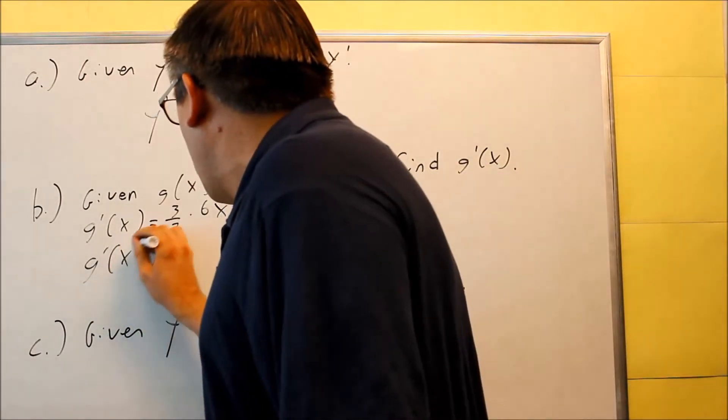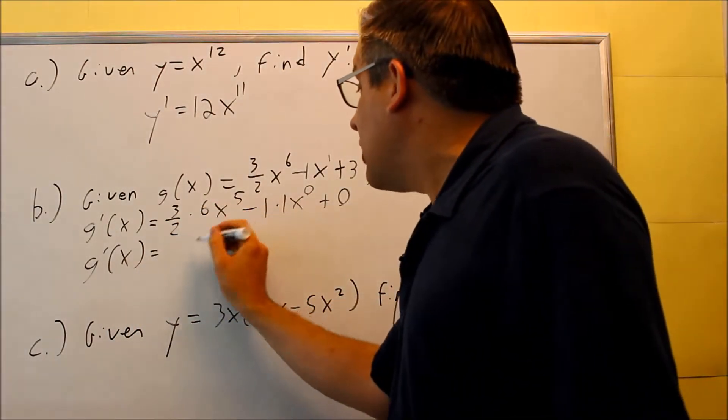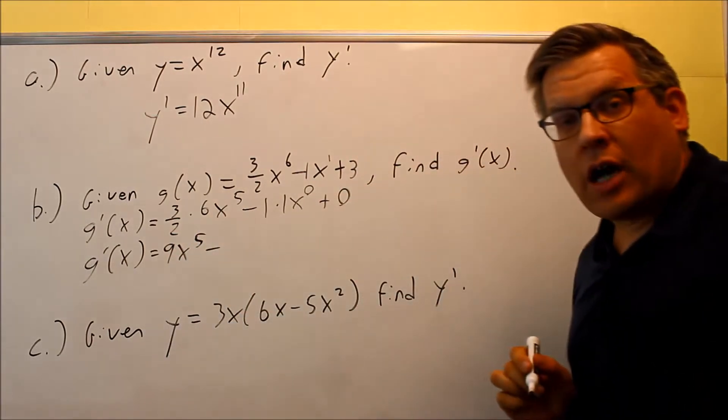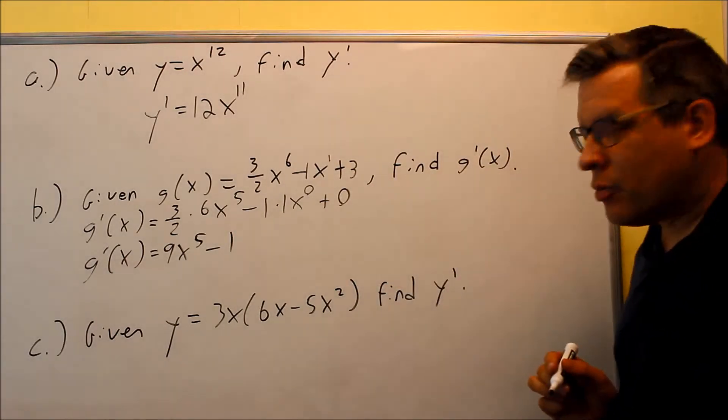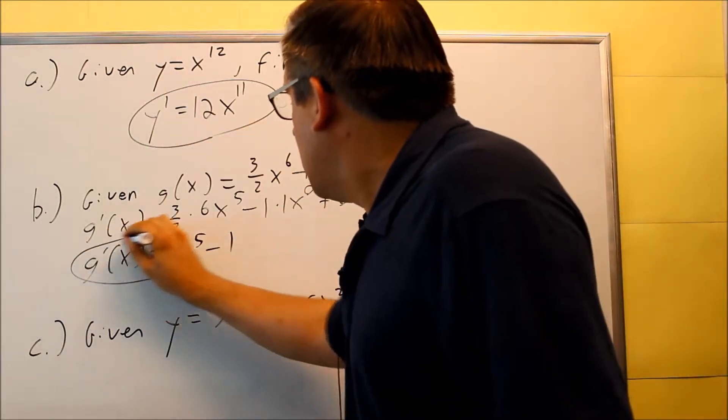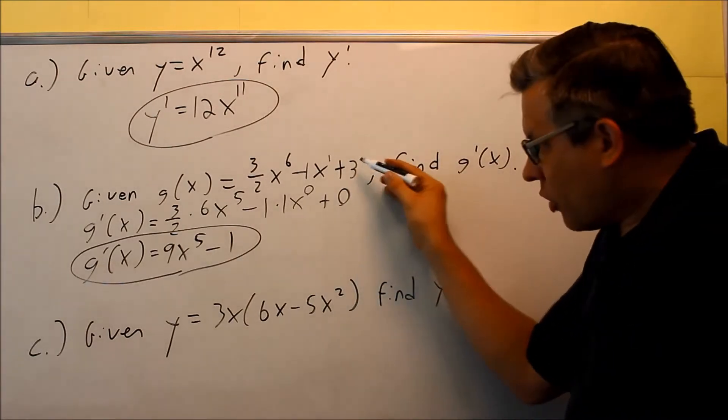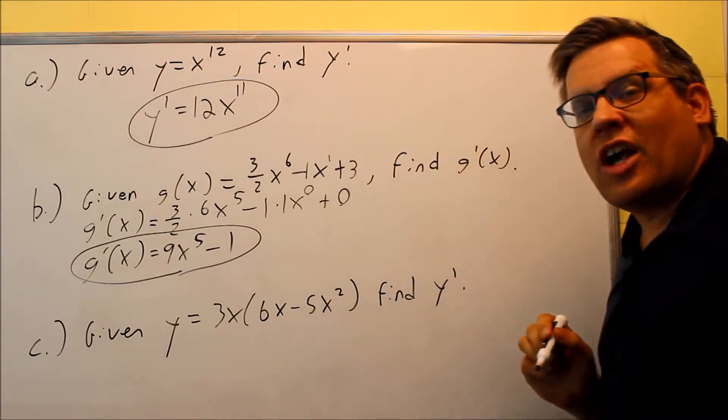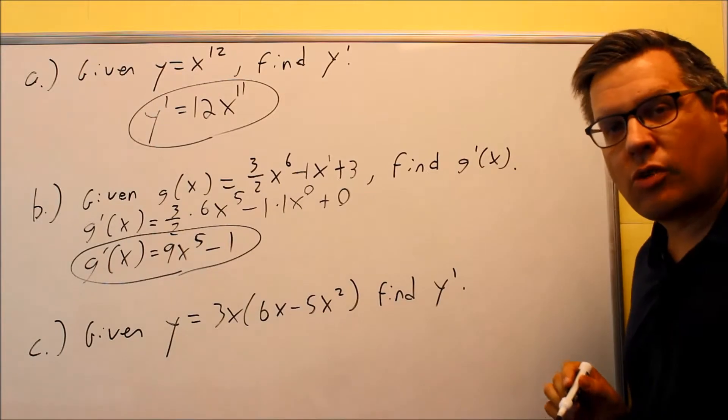And then once I combine all this together, I get 18 over 2 is 9, 9x to the fifth. Anything to the 0 power is 1, so this would just be 9x to the fifth minus 1. The 0 we don't have to put, so this would end up being our final answer. So let me circle these. So again, the 3 here, the reason why that went to 0, because in the previous video we talked about the derivative of any constant, it doesn't matter what it is, if there's no variable in it, the derivative is always going to be 0. So that's where that came from.